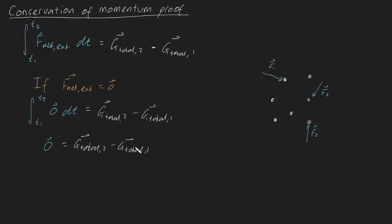Now what we can do is we can bring G total one to the other side. That's our initial total momentum. So that's going to be G total one is going to be equal to G total two. And you may not realize it right away, but if you think about it, we've proven the conservation of momentum.